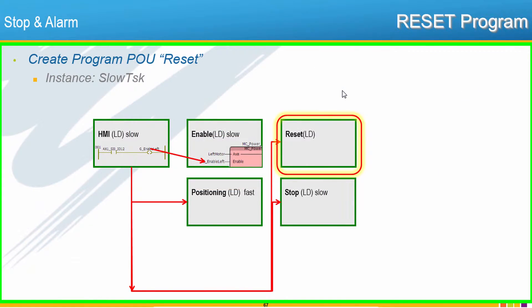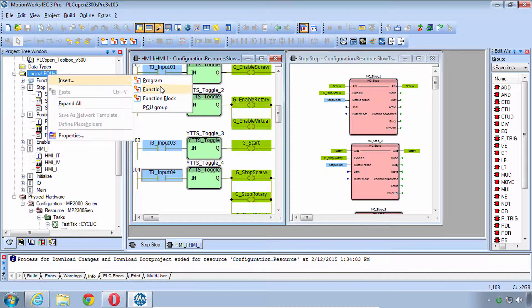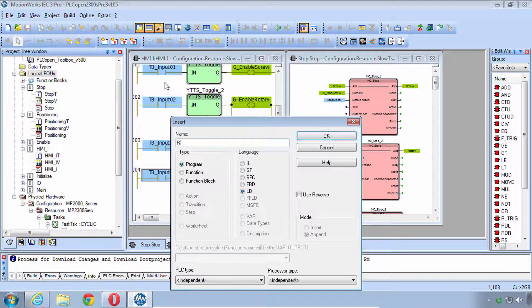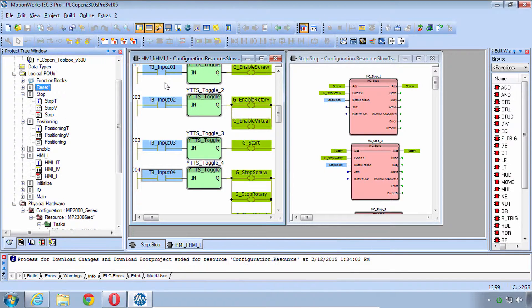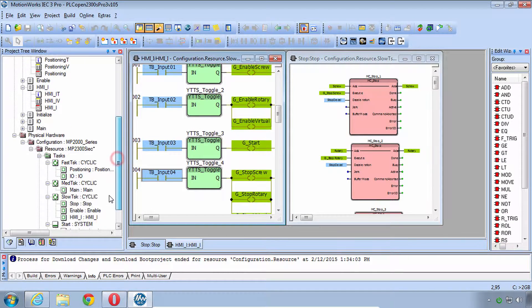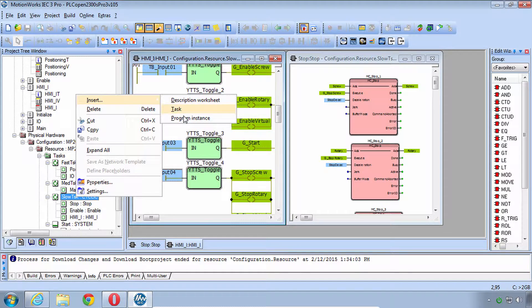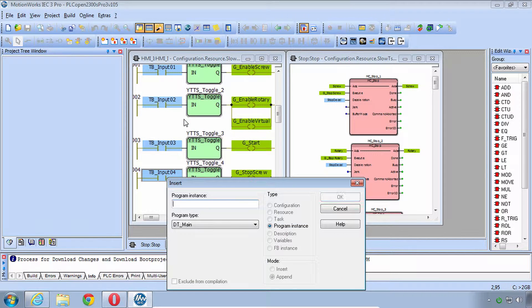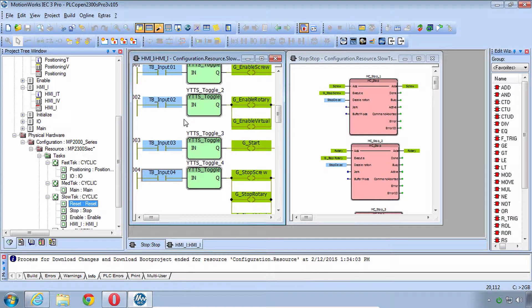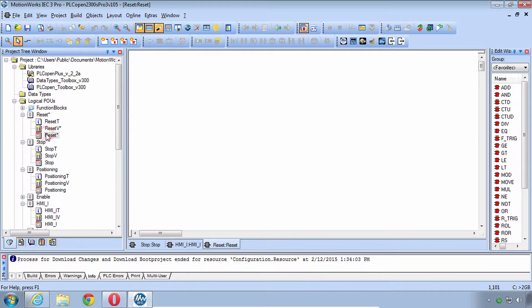Second part of this video is to both read and reset alarms that you might have. So let's make another program POU called Reset, also in the Slow Task. We'll insert a new program called Reset, and add it to the Slow Task. Insert a Program Instance Reset. And let's open that POU.